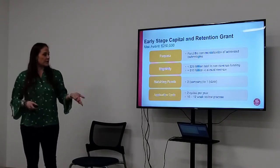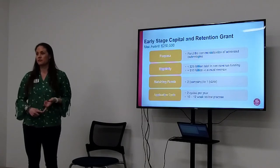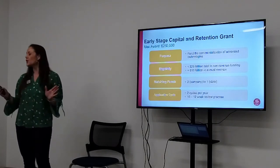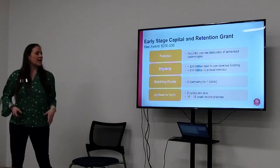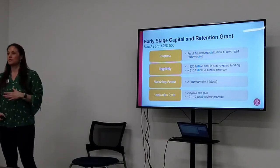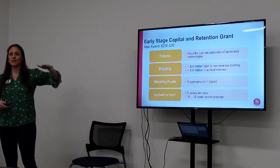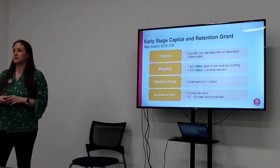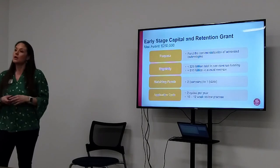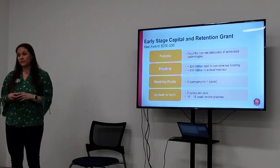Some eligibility requirements: you have to be headquartered in Colorado or have at least 50% of employees here, less than $10 million of annual revenue, and less than $20 million of third-party capital raised. We try to build a balanced portfolio — we've had companies in the past that raised $19 million right under the cap. People sometimes ask why a company with $19 million needs state funding, but the process is so heavily vetted by business, technical, and financial experts that sometimes having that state stamp of approval can help leverage additional funding.